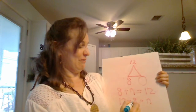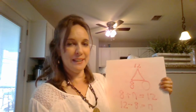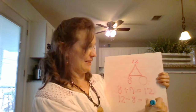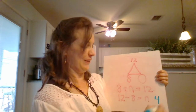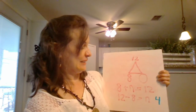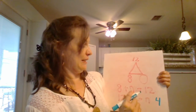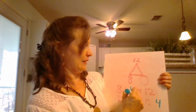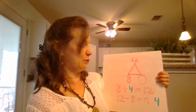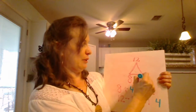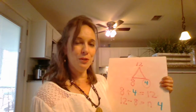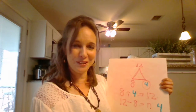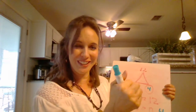So 12 minus eight equals N. What is that? It is four. So N is equal to four. Let's put it in there and see if it works: eight plus four is 12. So we are missing the four. My friend, you have started algebra. Look at you go.